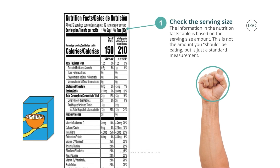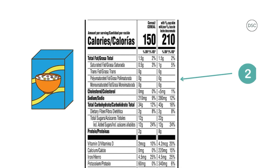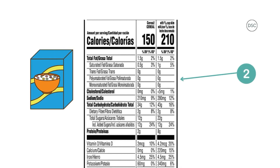Let's run through an example. This is a nutrition facts table from a box of cereal. Let's take a look at running through our five steps. Step one: check the serving size. For this box of cereal, the serving size is one and one-third cups. If you make a fist, that's about the size of one cup — it's that plus a little bit extra. This leads us to step number two, which is to browse the nutrients.